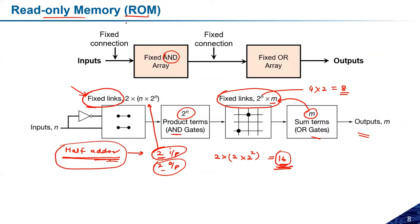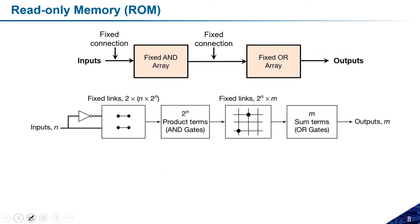To summarize: for a ROM-based half adder, there will be 16 fixed links on the AND side and 8 fixed links on the OR side. Out of these, which links are connected and which are not depends on the exact expression for the outputs. If you have any doubt at this point, you can ask — understanding this is important before we move to programmable logic design.